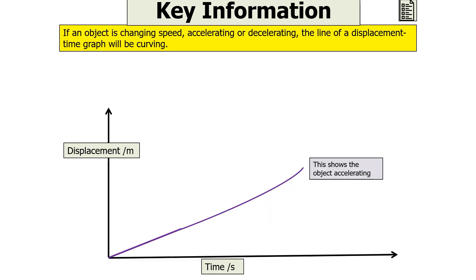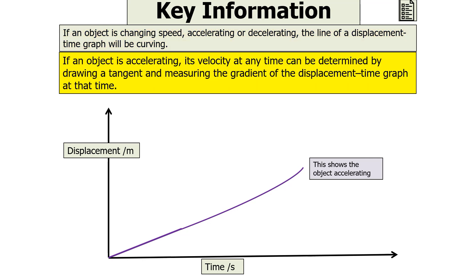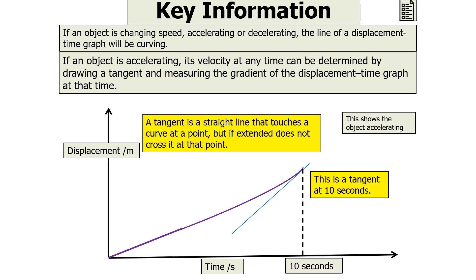This is an issue if an object is changing speed, because if an object is changing speed — accelerating or decelerating — then the line of the displacement time graph will be curving. If the object is accelerating, its velocity at any time can be determined by drawing a tangent and measuring the gradient of the displacement time graph at that time. A tangent is a straight line that touches the curve at a point but, if extended, does not cross it at that point.